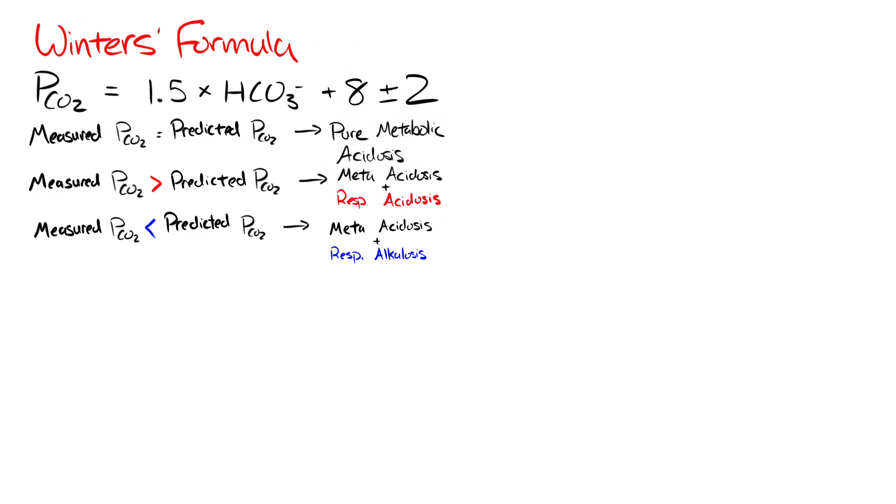Let's say we have an established metabolic acidosis with a PCO2 of 24 and a bicarb of 10. The only input into the formula is just the bicarb. So, we plug in 1.5 times 10, our bicarb, plus 8, plus or minus 2.